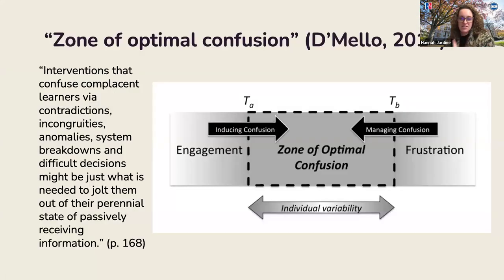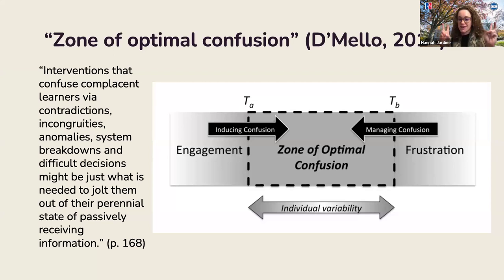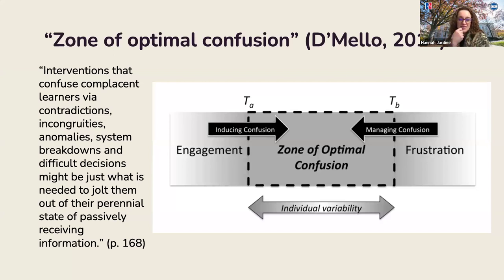From the research, there's this idea of the zone of optimal confusion — like the 'just right' zone in Goldilocks and the Three Bears. Not too hot, not too cold, but just right. There's a point where we're not inducing enough confusion or challenge, and there's also a point where students might be overwhelmed or frustrated because there's too much confusion or too much challenge. There's a zone of optimal confusion, and of course there's individual variability within that zone, so taking the time to get to know your students is important — recognizing that students might fit differently within that balance.